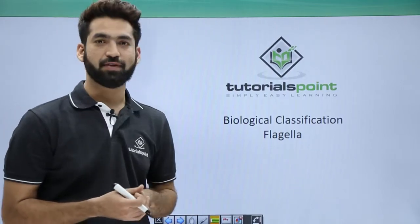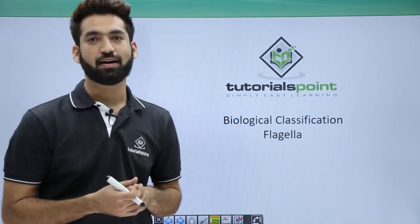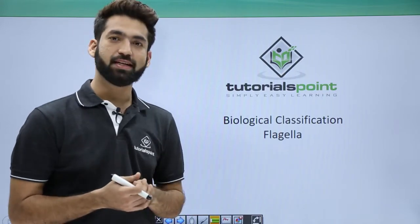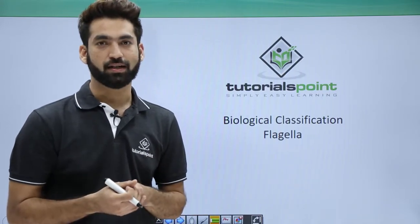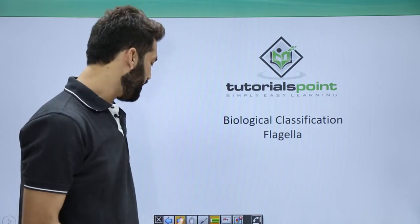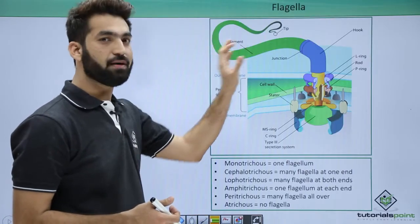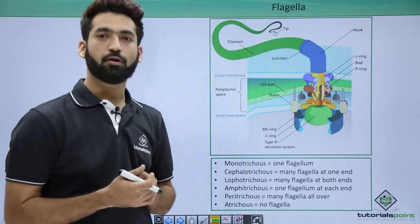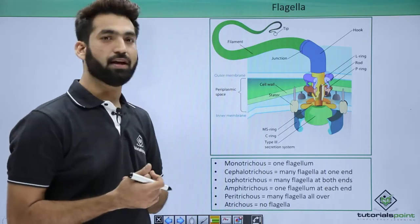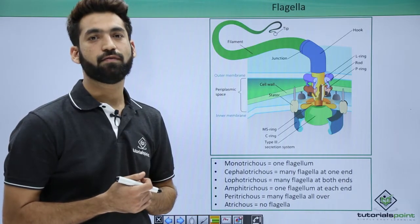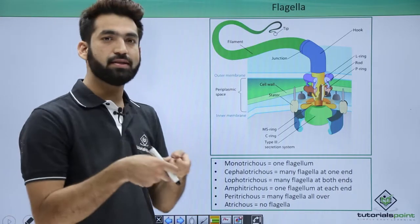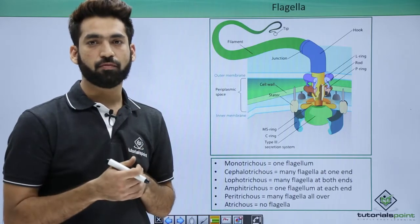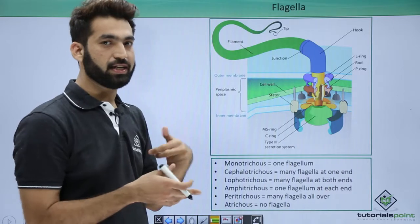In this session we'll be talking about flagella. Flagella are one among the surface structures of bacteria and are basically required for the locomotion of bacteria. Flagella have three parts: filament, hook, and basal body. The longest part is the filament, which is made up of a protein called flagellin. The filament is the outermost emerged part which keeps spinning, and that's how the bacteria moves.